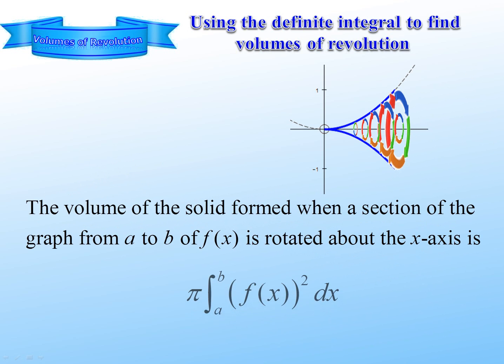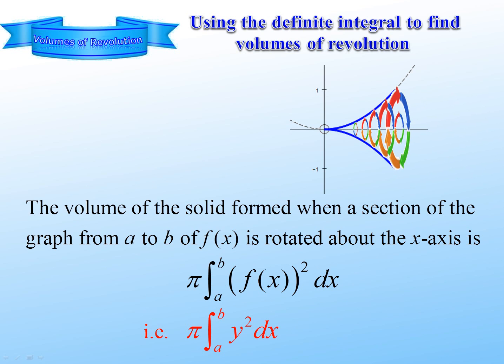And that volume from a to b is going to be pi times the integral from a to b of the square of f(x) dx, or using x-y notation, pi times the integral of y squared dx.